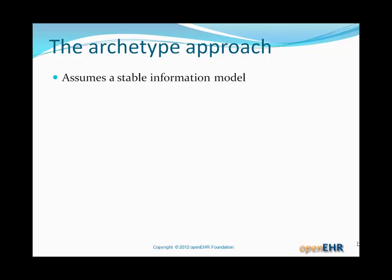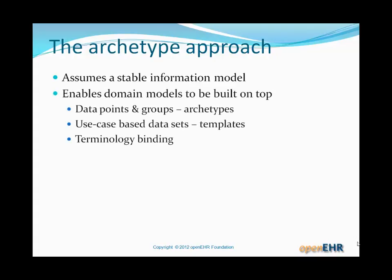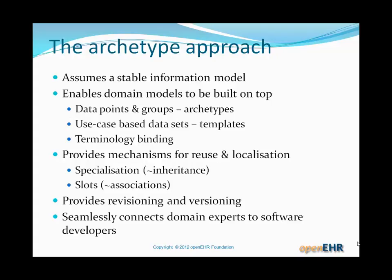The archetype approach tries to address these areas. It assumes a stable information model. It enables domain-level models to be built on top: data points and groups, which we call archetypes, and use case based data sets, which we call templates. It provides terminology binding, mechanisms for reuse and localization including specialization — something like inheritance — and slots, which are how we join archetypes together to build larger archetypes. It provides revisioning and versioning to handle changes to content model definitions without invalidating existing data, and it seamlessly connects domain experts to software developers by a tool chain, giving us the traceability we discussed earlier.